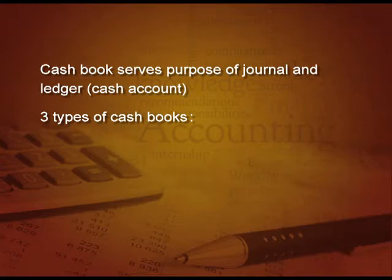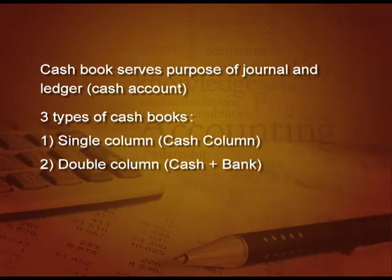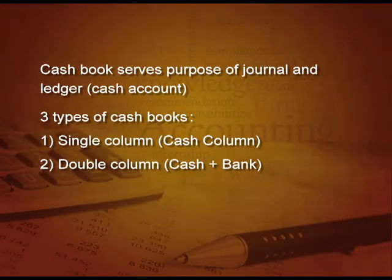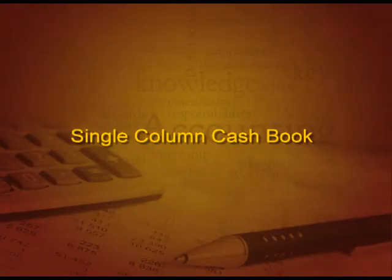There are three types of cash book. First, single column cash book, in which there is only one column — that is the cash column. Next, double column cash book, in which we have two columns — cash as well as bank. And the third type is petty cash book, in which we record all the petty expenses — small expenses.